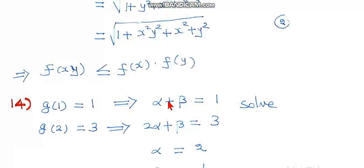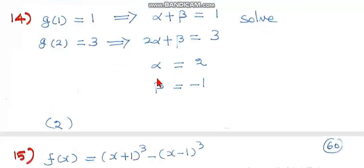Question number 14: you are given a function g as a set of ordered pairs, and g(x) is given as αx + β. The values of α and β are needed. Since g(1)=1, we get α + β = 1. Since g(2)=3, we get 2α + β = 3.